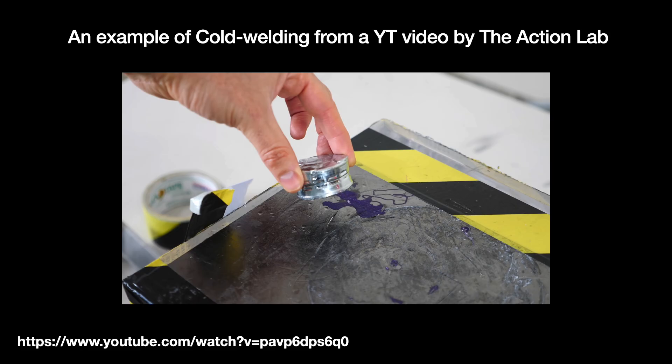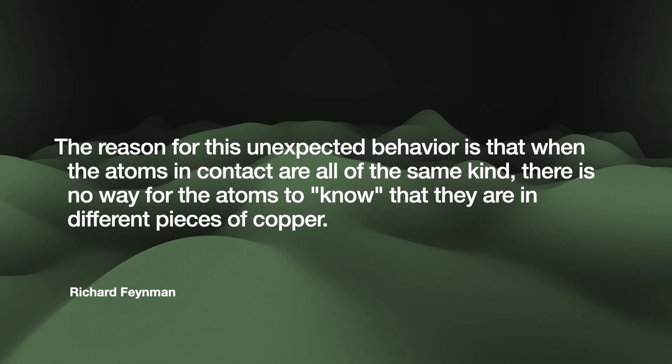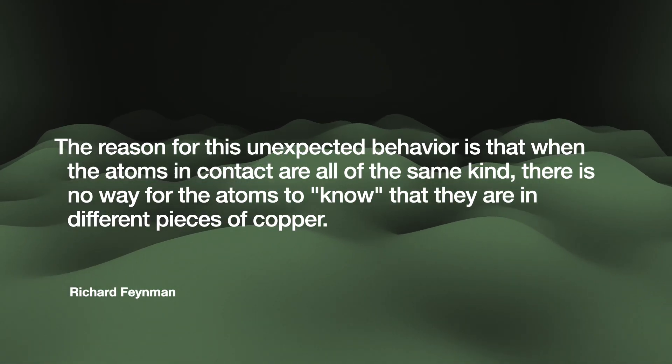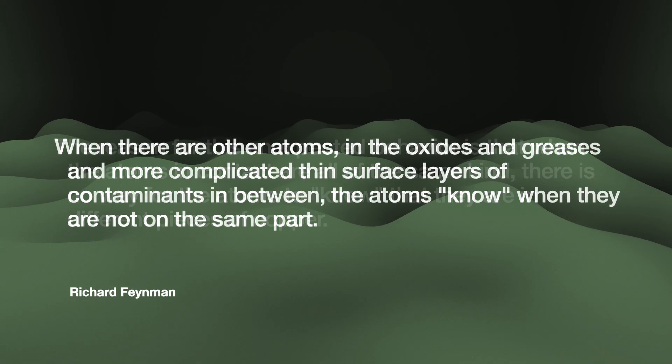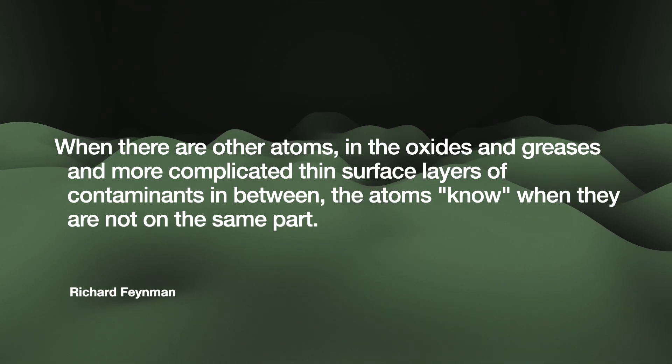Richard Feynman has this famous quote that every textbook seems to mention. The reason for this unexpected behavior is that when the atoms in contact are all of the same kind, there is no way for the atoms to know that they are in different pieces of copper. When there are other atoms in the oxides and greases and more complicated thin surface layers of contaminants in between, the atoms know when they are not on the same part.